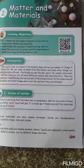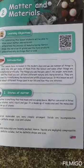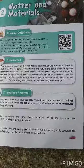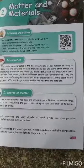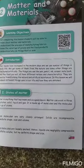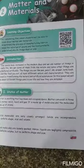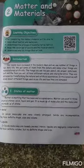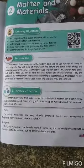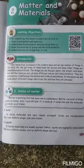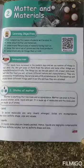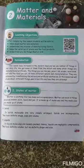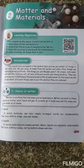Some are artificial, which is man-made, and few are natural things. We will see about all these things in detail in this lesson. First one is states of matter. We have already seen about matter. Matter is anything that has mass and occupies space. Everything in the universe is made up of matter.